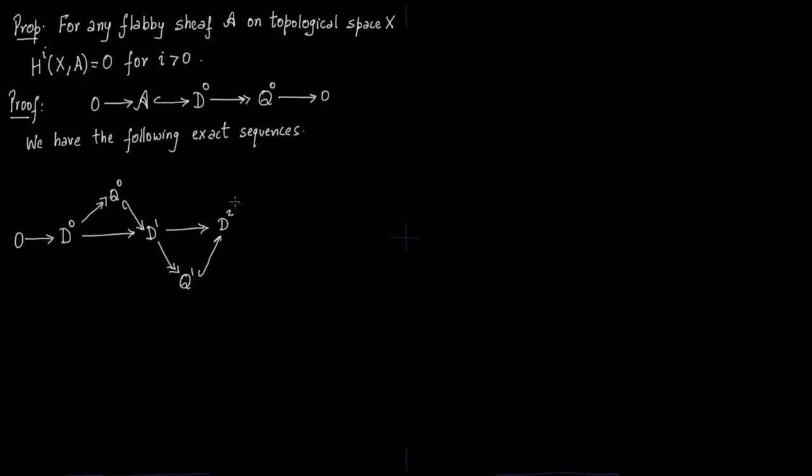The map from D1 to D2 is the composition of the map from D1 to Q1 and Q1 to D2. Again from D2 you want to form Q2. Q2 is nothing but D2 over image of D1. Then Q2 injects into D3 where D3 is the discontinuous sections of Q2. And the map from D2 to D3 is the composition of D2 to Q2 and then Q2 to D3.